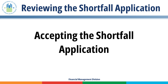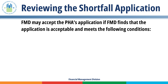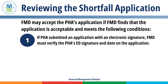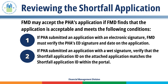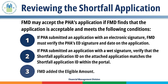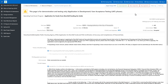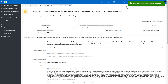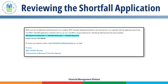Accepting the Shortfall Application. FMD may accept the PHA's application if it is acceptable and meets the following conditions: (1) If the PHA submitted an application with an electronic signature, FMD must verify the Executive Director's signature and date. (2) If the PHA submitted an application with a wet signature, verify that the Shortfall Application ID on the attached application matches the ID within the portal. (3) FMD has added the eligible amount. Click the Accept Application button. The portal notifies the PHA's Executive Director and Point of Contact via email that HUD has accepted the Shortfall Application.